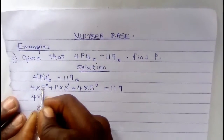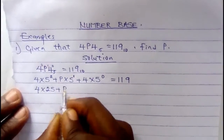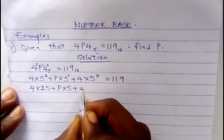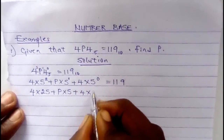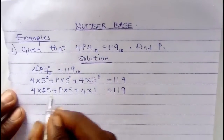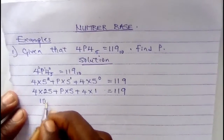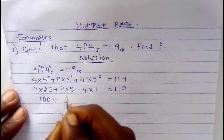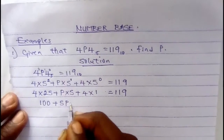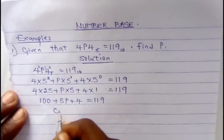So: 4 times 5 squared gives you 25, p times 5 to the power of 1 gives you 5, and 4 times 5 to the power of 0 gives you 1. Then: 4 times 25 gives you 100, plus p times 5 gives you 5p, plus 4, equals 119.